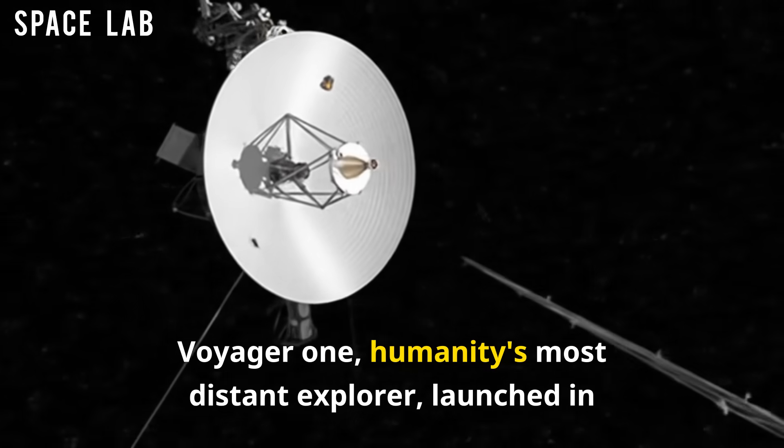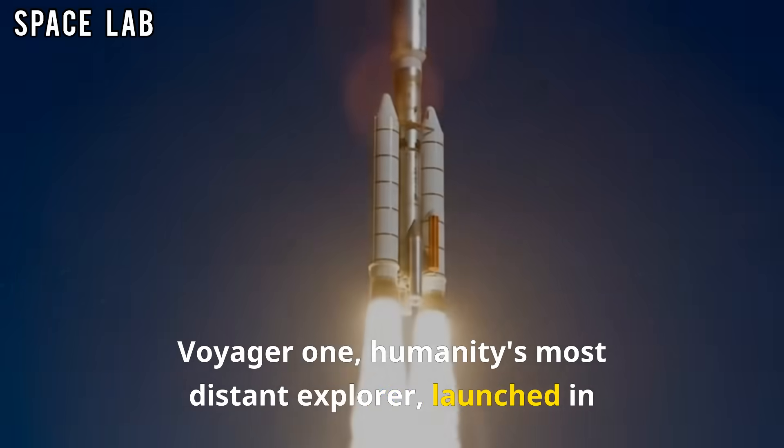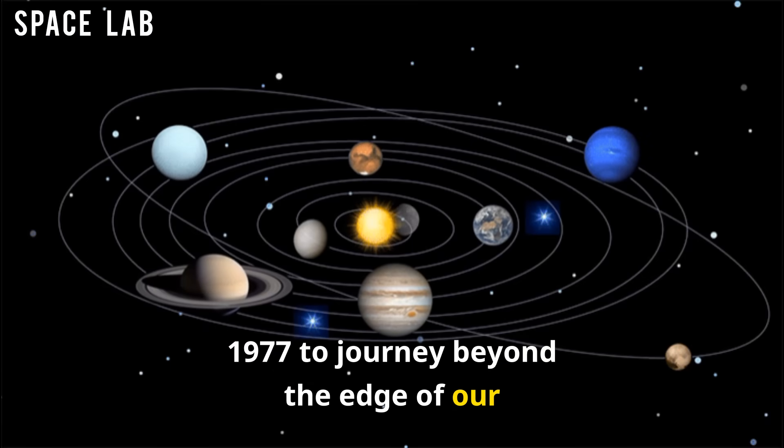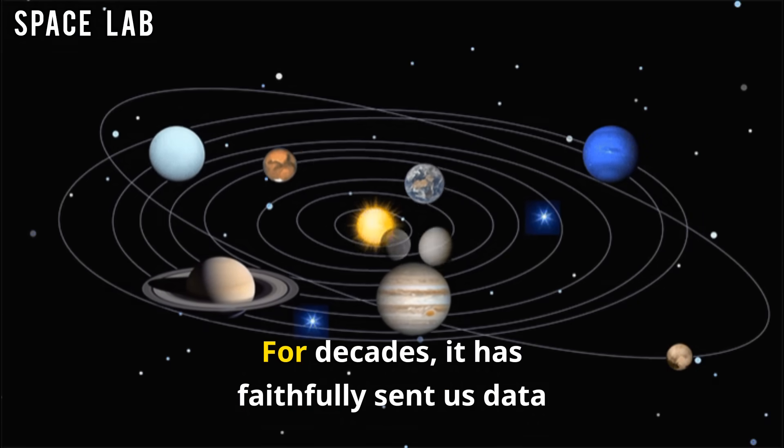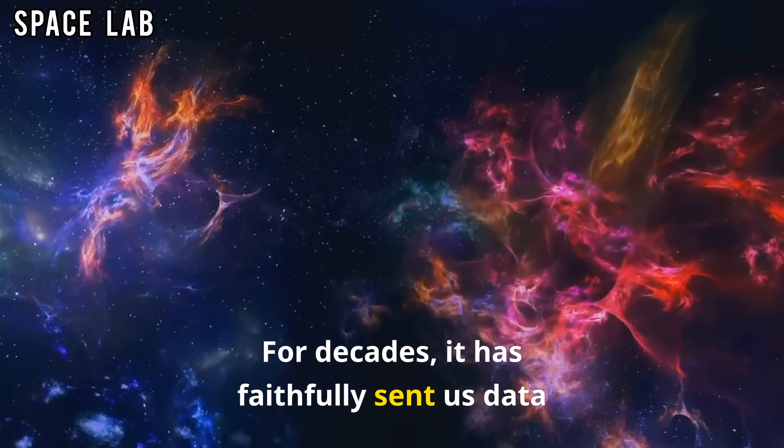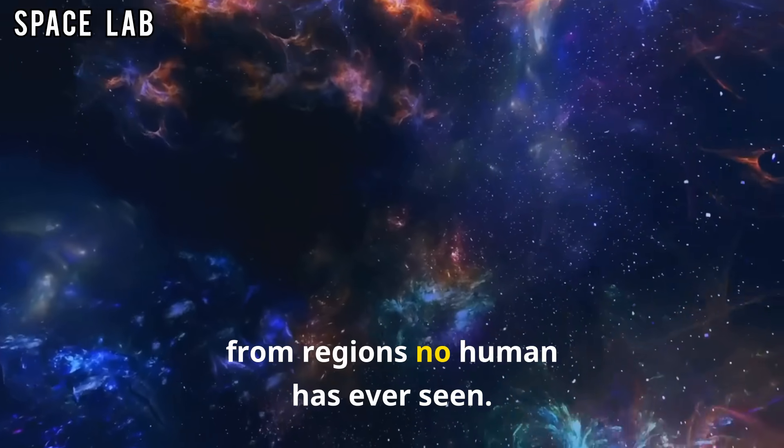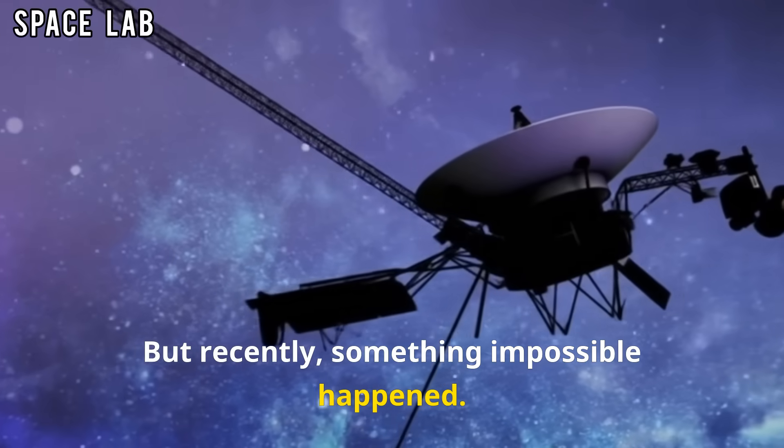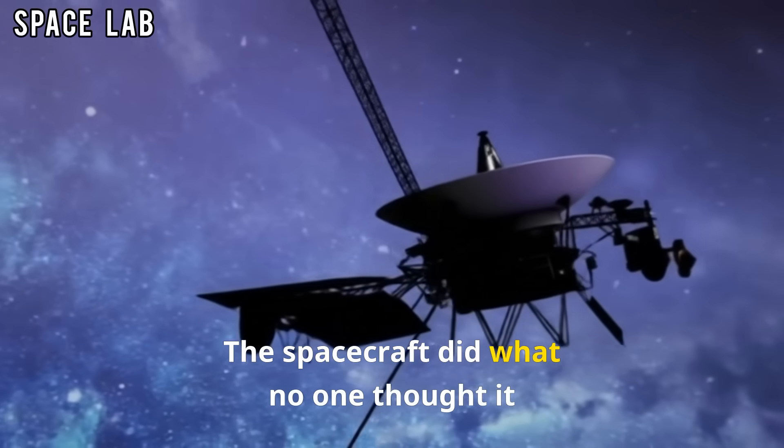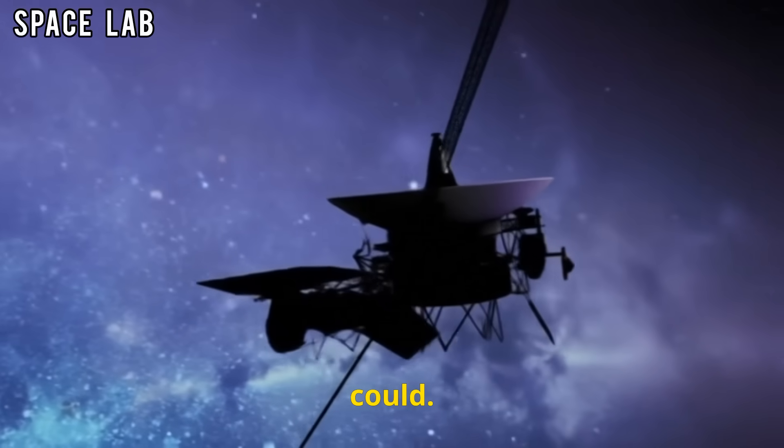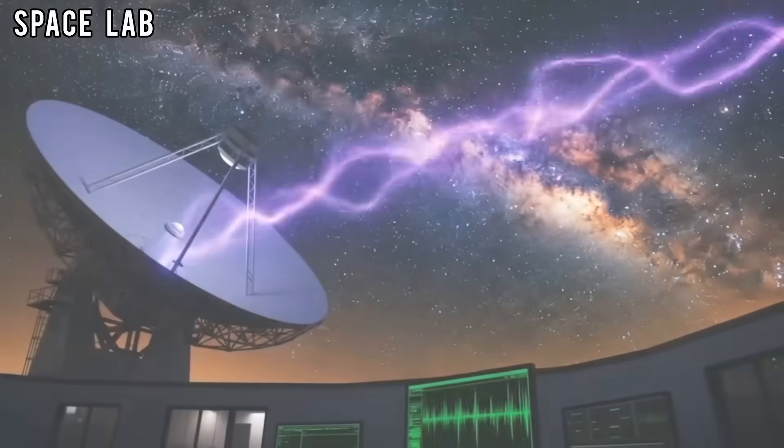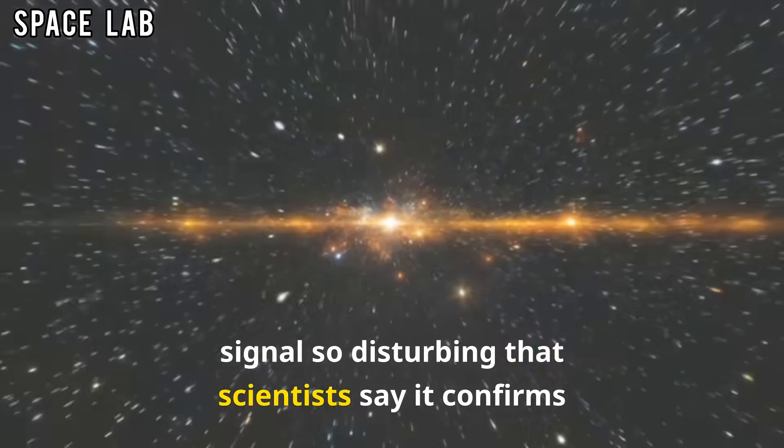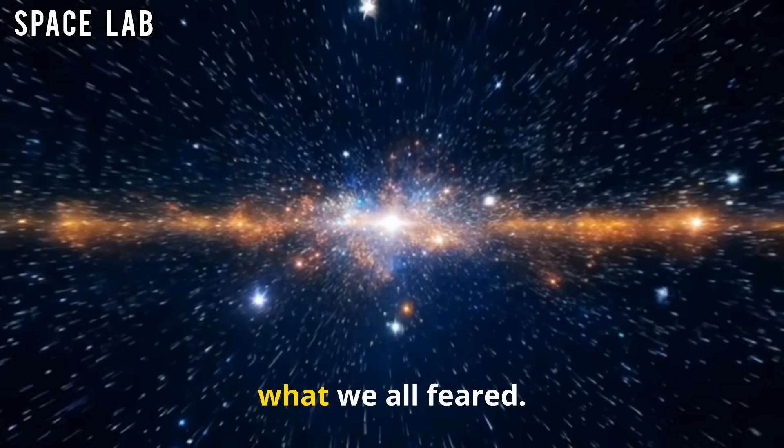Voyager 1, humanity's most distant explorer, launched in 1977 to journey beyond the edge of our solar system. For decades, it has faithfully sent us data from regions no human has ever seen. But recently, something impossible happened. The spacecraft did what no one thought it could. It turned back. And in that turn, it sent back a signal so disturbing that scientists say it confirms what we all feared.